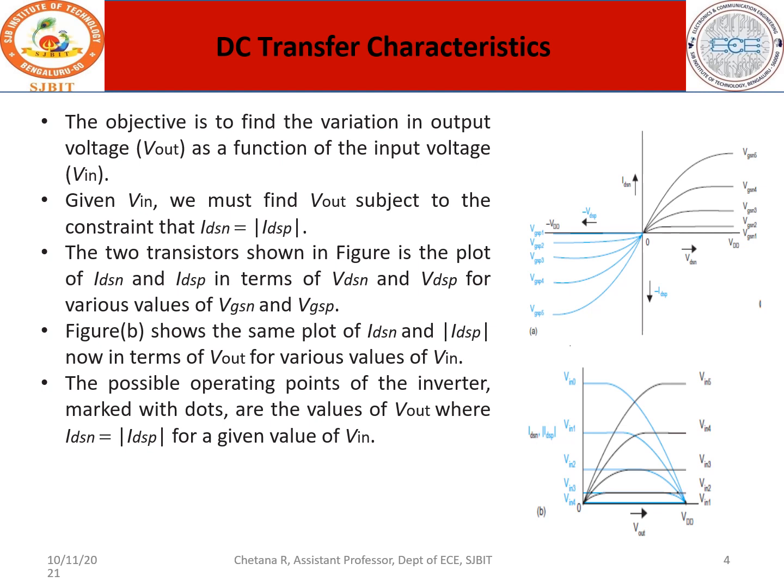Considering this, the transistor characteristics are plotted in terms of VDSN, VDSP, IDSN, and IDSP for various VGS values. The input corresponds to VDSN and the drain current controlling voltage is the gate voltage, giving different characteristics. This is the NMOS characteristics, and similarly this is the PMOS characteristics. When the two characteristics are folded and superimposed, figure B shows the same plot of IDSN and IDSP in terms of Vout for various values of VIN.